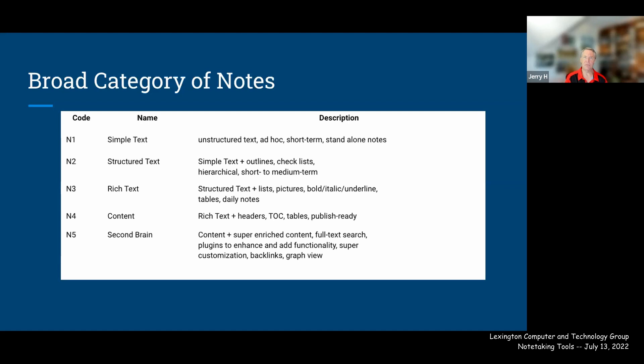Then you move up to content — where the note becomes not just a to-do list or a short letter but something you may want to publish. You want a table of contents, fancier tables, and an easy publish-ready workflow. You want a collection of files with links across them, a table of contents, and the ability to choose color schemes and themes and publish out to the web.